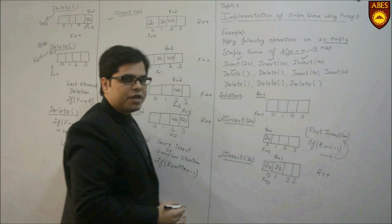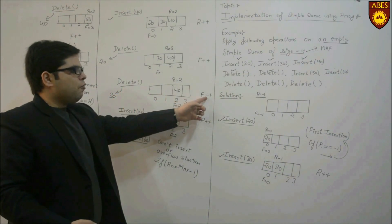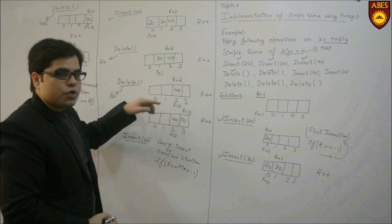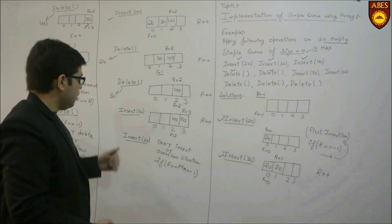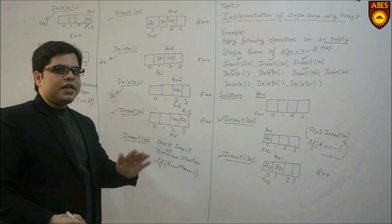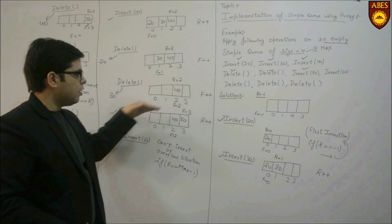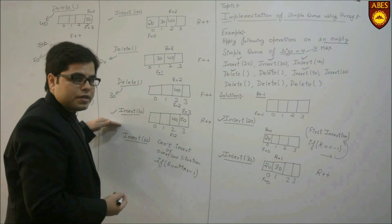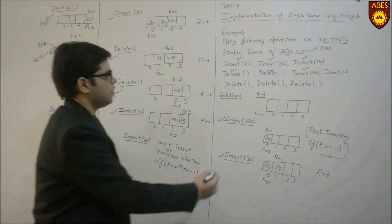Next we have to insert 50. During insertion rear moves — rear plus plus — from index 2 to index 3. We insert 50 at index 3. Next we have to insert 60. During insertion rear should move, but we cannot move rear one step forward because rear is already at the last location. So we cannot apply the insert 60 operation — this is an overflow situation. We check: if before this insertion rear is at max minus 1 (that is, index 3), we cannot move one step forward, so this is the overflow situation.